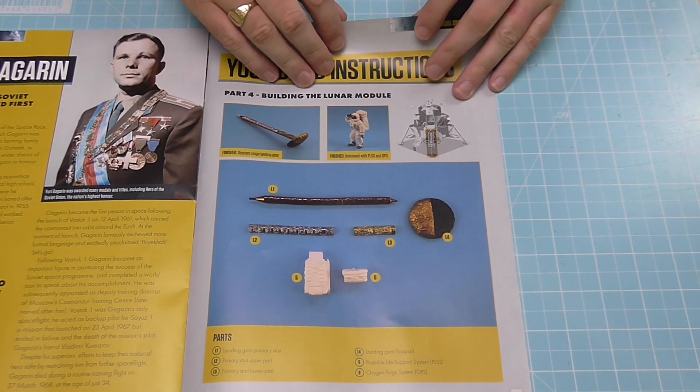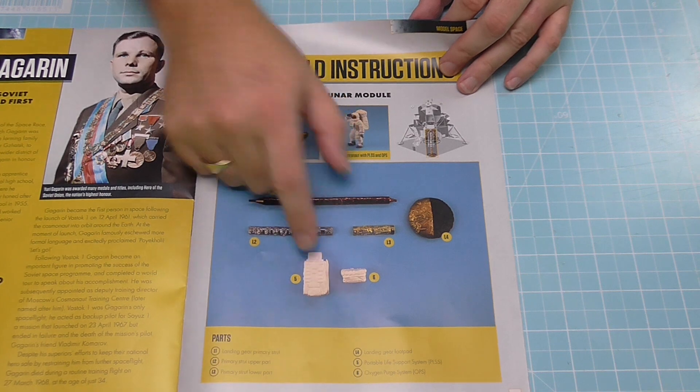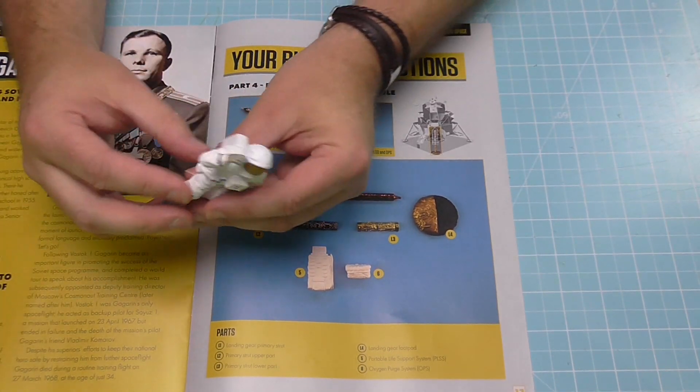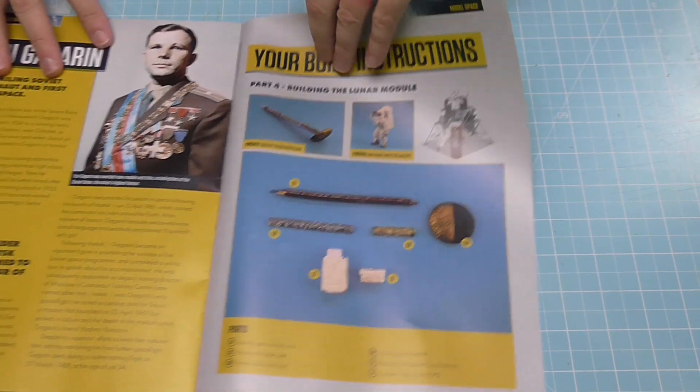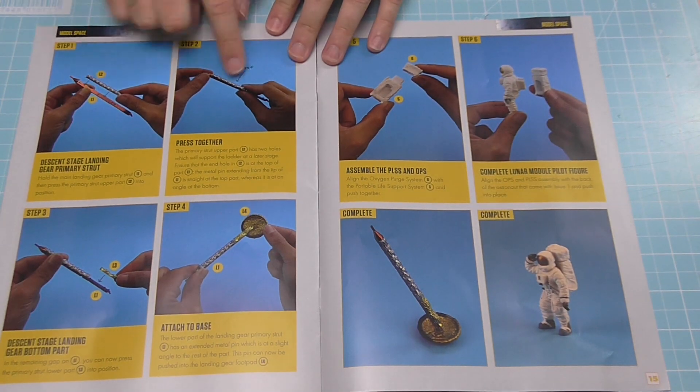For this we're also going to be doing the oxygen purge system and the portable life support system for our little astronaut that we had last time who unfortunately is missing that from his back at the moment. So we're going to complete that. Quite simply we're just going to be pushing some parts. We don't need any glue or screwdrivers for this.